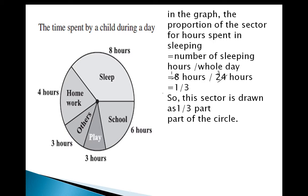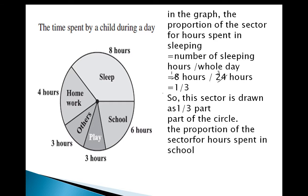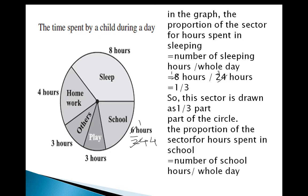Now the proportion of the sector for time spent in school: for school, 6 hours are spent out of 24. The number of school hours upon whole day is 6 upon 24. Since 6 fours are 24, the proportion is 1 upon 4. We check our answer: 6 hours upon 24 hours gives 1 upon 4. Yes, that is correct.